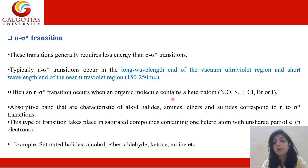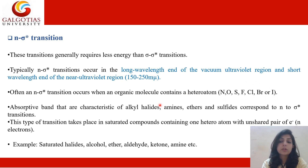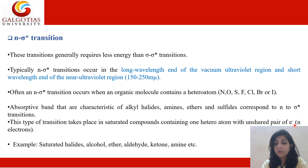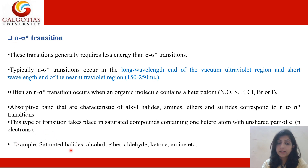N to sigma star transitions occur when organic compounds contain heteroatoms such as nitrogen, oxygen, sulfur, fluorine, chlorine, bromine, or iodine. The absorptive bands characteristic of alkyl halides, amines, ethers, and sulfites correspond to n to sigma star transitions. This type of transition takes place in saturated compounds having one heteroatom with an unshared pair of electrons. Examples include saturated halides, alcohols, ethers, aldehydes, ketones, and amines.